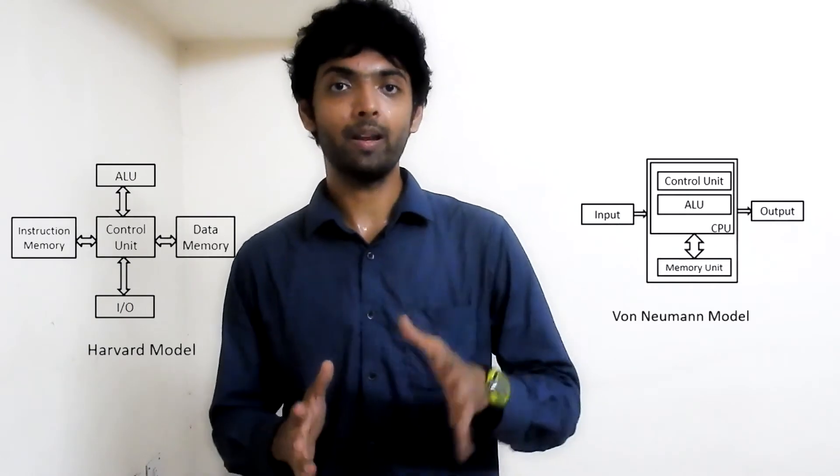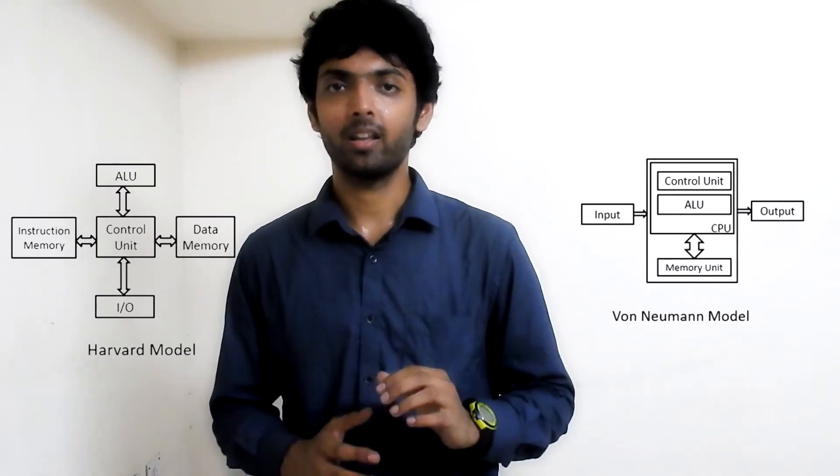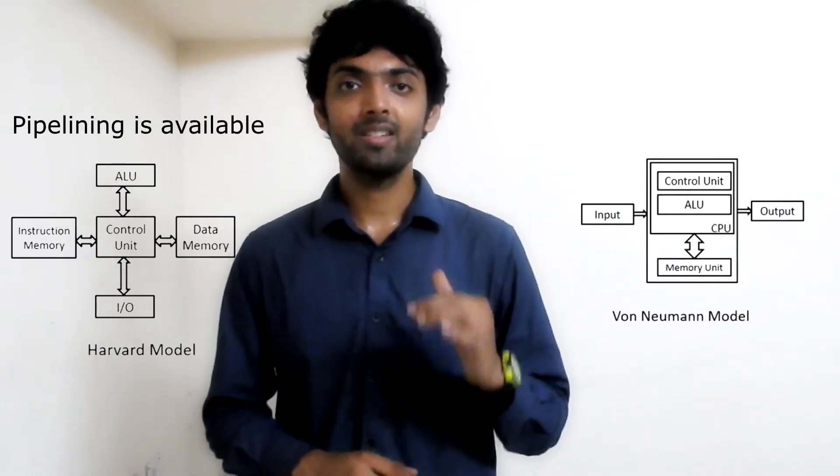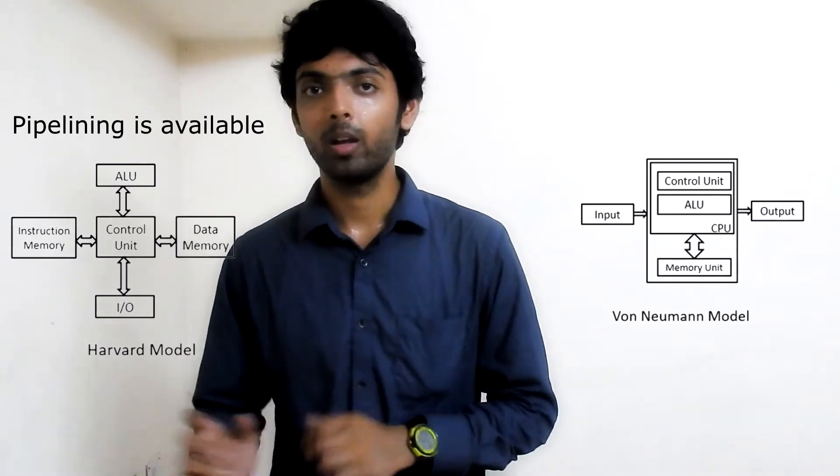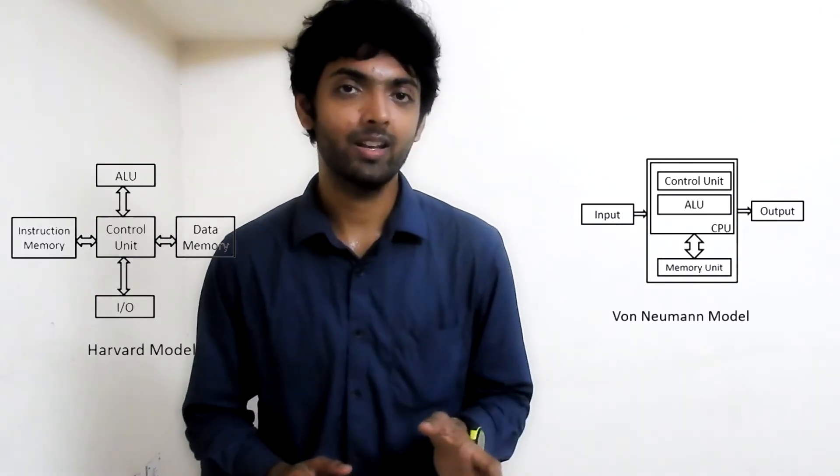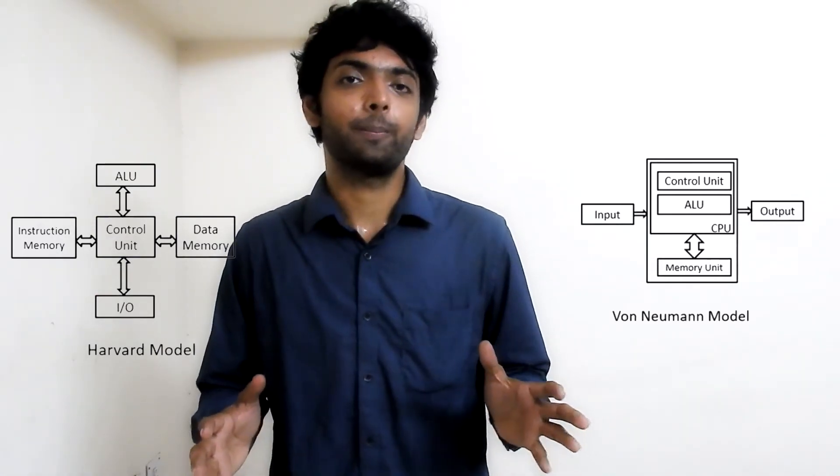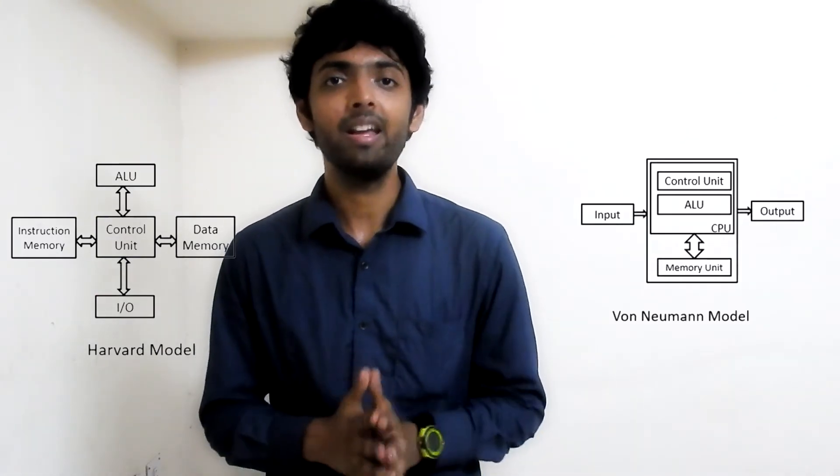The second point is pipelining. Pipelining can be done in Harvard architecture, meaning the data can be fetched, processed, decoded, or encoded at the same time using the pipeline method. But when it comes to Von Neumann architecture, we don't have any facility like that.